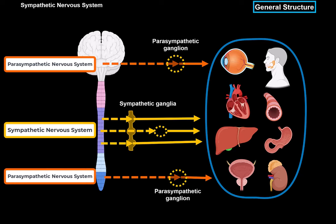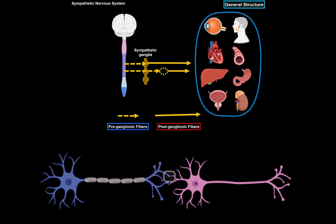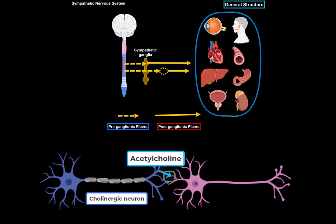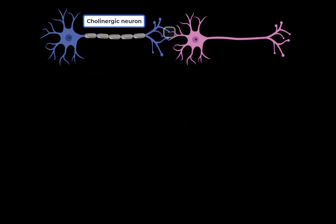Notice what's common for both systems: they both have pre- and postganglionic neurons, which release different neurotransmitters — this is really important. The preganglionic neurons release acetylcholine, which is why they're called cholinergic neurons. Acetylcholine binds to nicotinic receptors on the cell membrane of the postganglionic neuron. Nicotinic receptors are ion channels that open when acetylcholine binds, allowing positive ions like sodium and calcium to cross the membrane, activating the postganglionic neuron to initiate an action potential. Most postganglionic neurons in the sympathetic nervous system are adrenergic neurons, releasing adrenaline and noradrenaline — catecholamines.